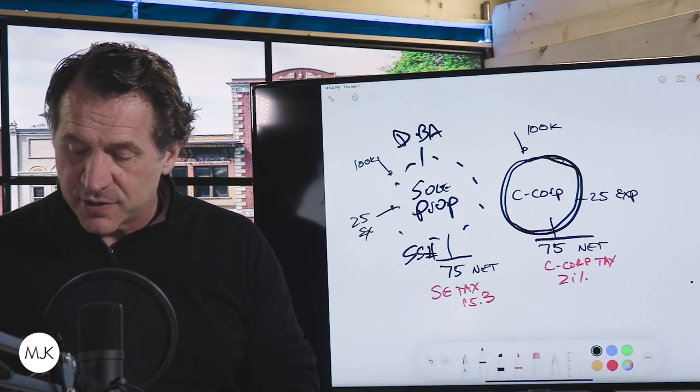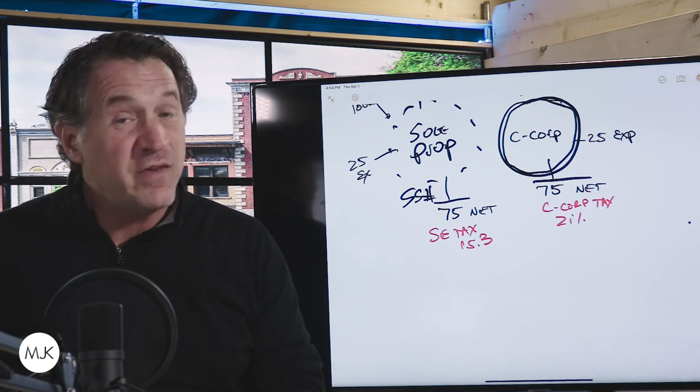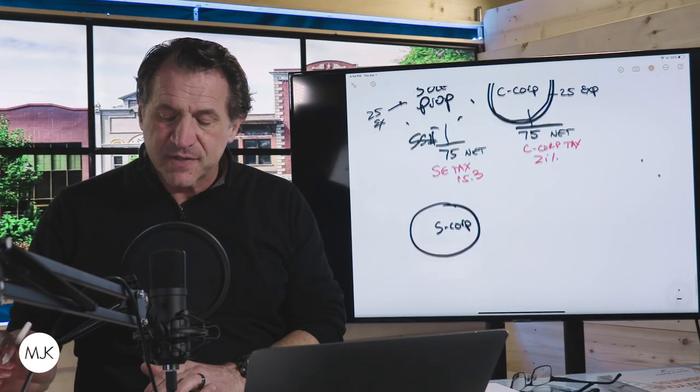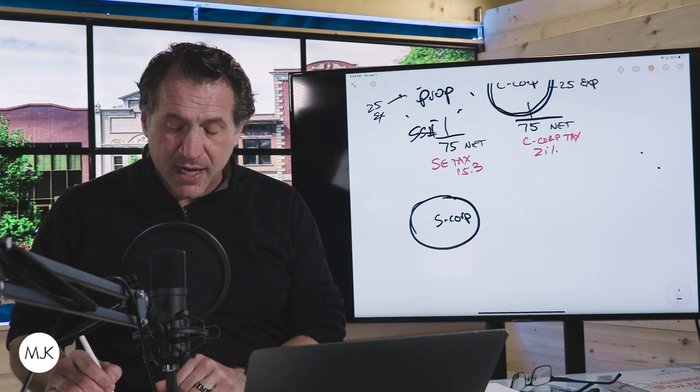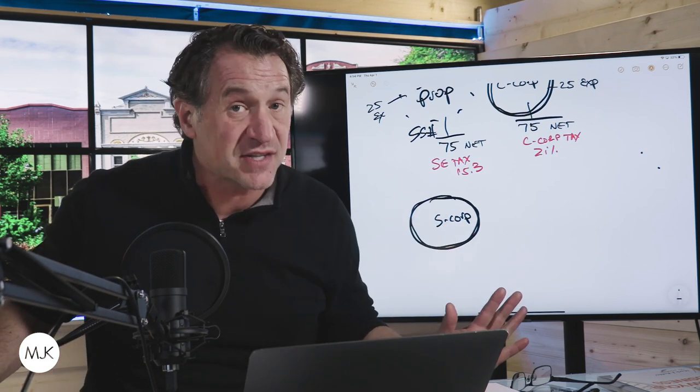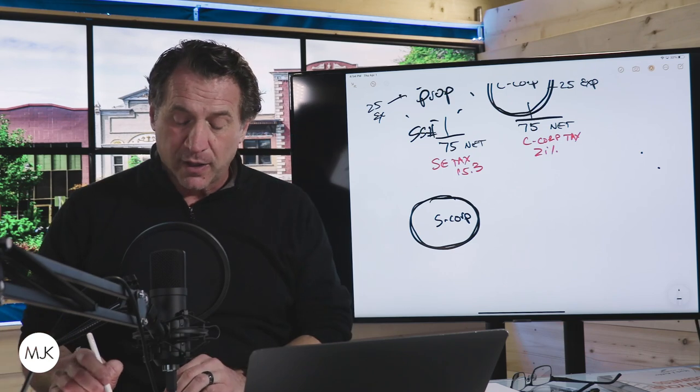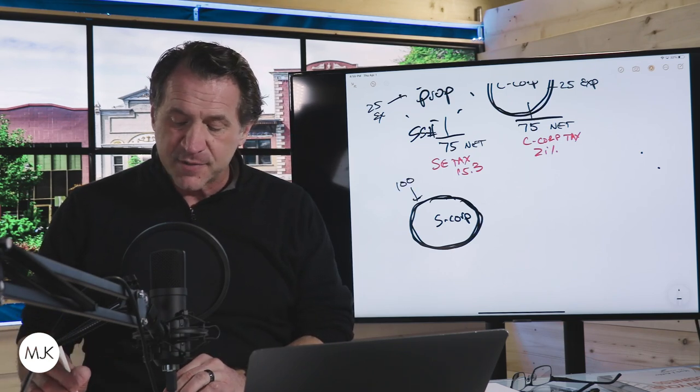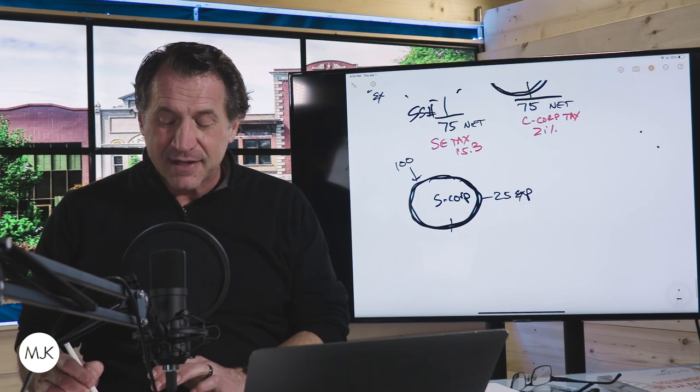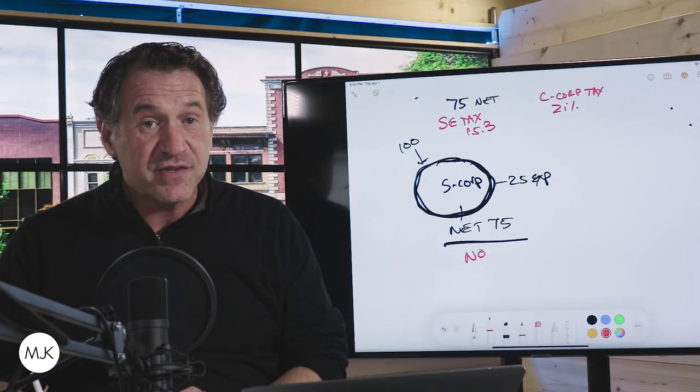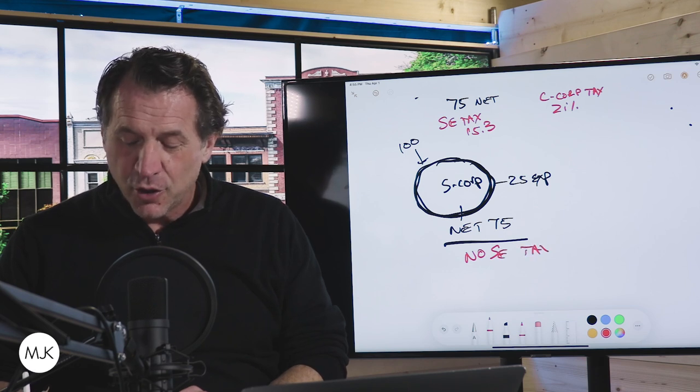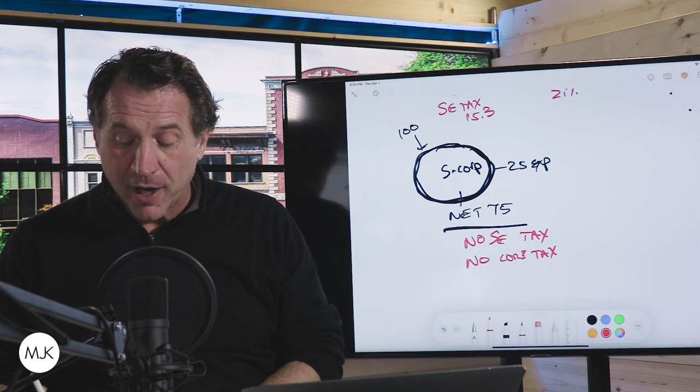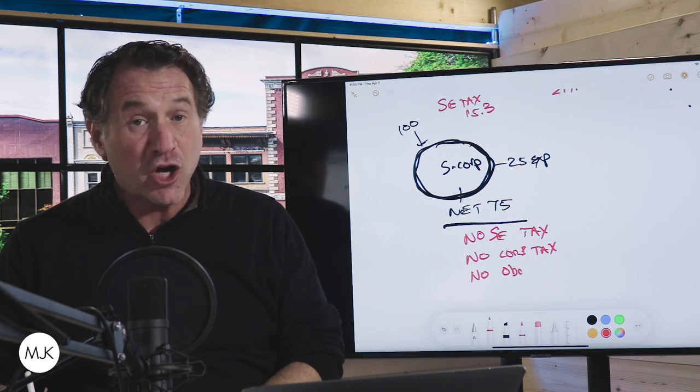So your only other option was 50 years ago came into play the S-corp. The S-corp said, hey, I get the same protection. Now this was before LLCs even existed. So don't go anywhere. So here's my S-corp. If I bring in 100 grand, I spend the same 25 on expenses. And I net 75, no self-employment tax, no corporate tax, and no Obamacare. That's pretty awesome.